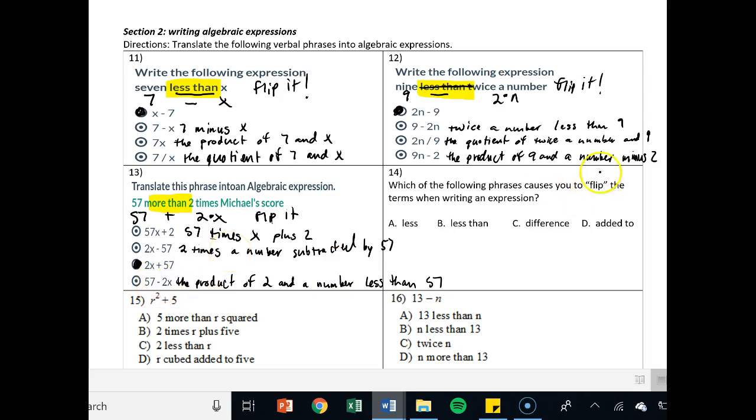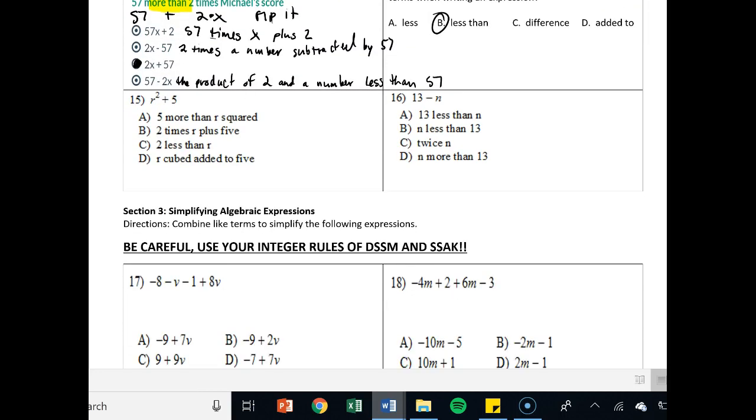It says which of the following phrases do you flip the terms when writing the expression? And that is our favorite term, less than. On the other ones, we've got r squared plus 5. So we're looking like r squared plus 5. This one says r squared more than, which means plus. So a is our correct answer. The other problems would read 2r plus 5 or r minus 2 because the less than, remember, flips the sign.